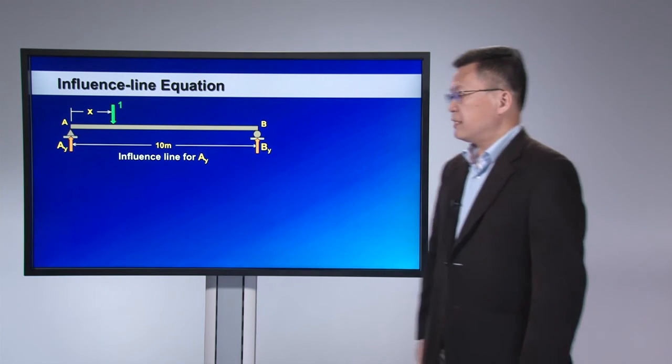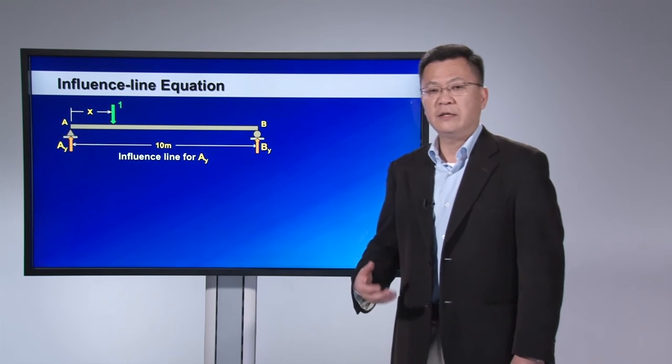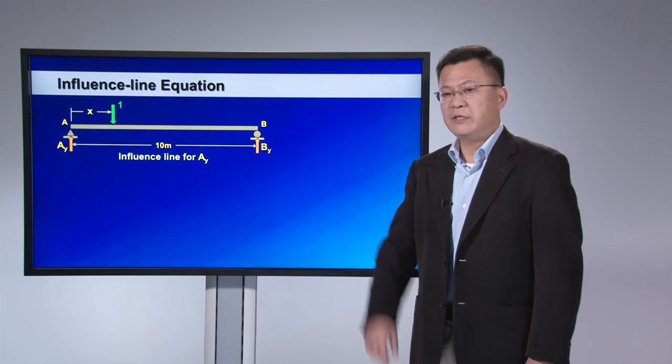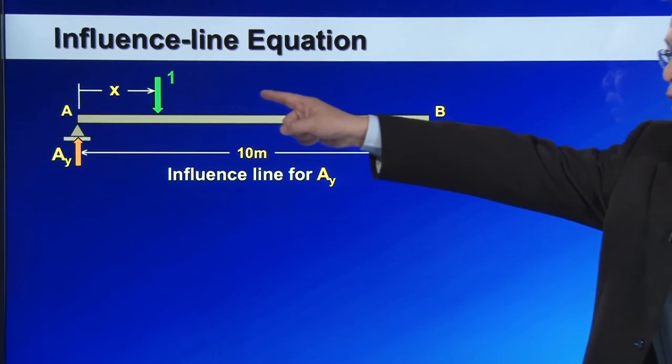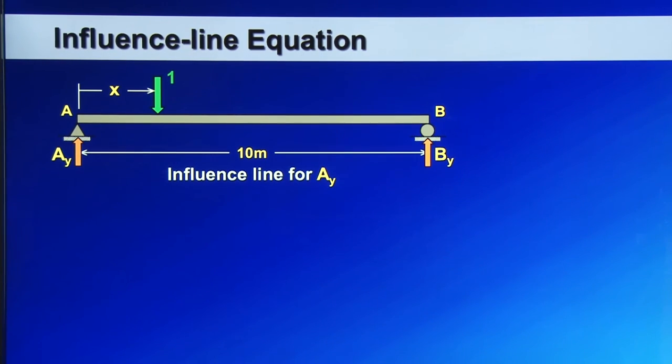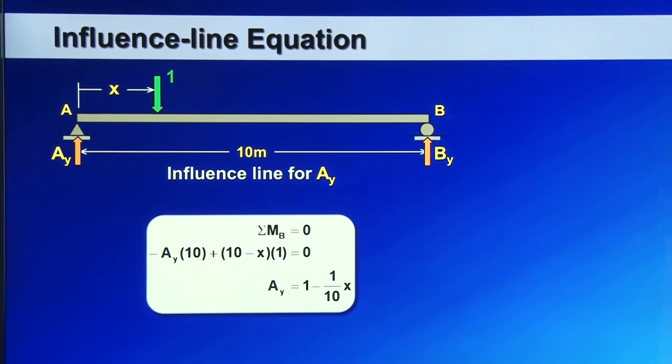Now if you realize that I don't have to repeat the equilibrium calculations many times, if I set the locations of the downward unit force as a variable x there, and then directly perform the equilibrium calculations, just like before,